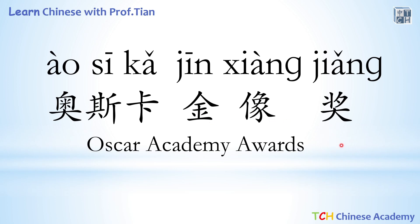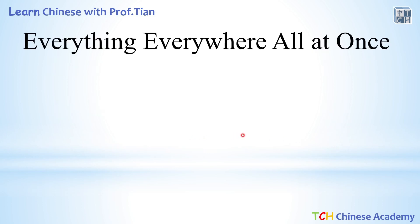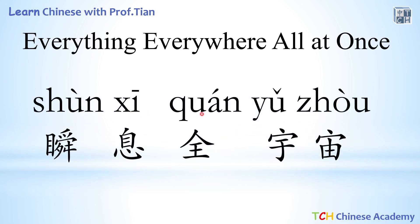Now let's see — this year, which picture has won the Oscar best picture award? Yes, that's Everything Everywhere All at Once. And in Chinese we say 瞬息全宇宙. So 瞬息 means very fast — something happens all of a sudden, or with a blink of an eye. And 全 means everything, all, or whole. And 宇宙 means the universe. So we just say 瞬息全宇宙.